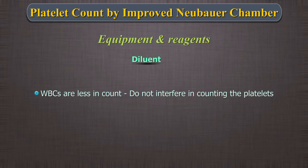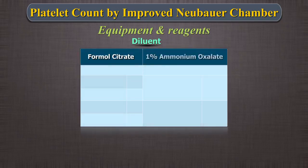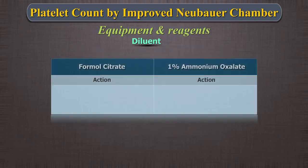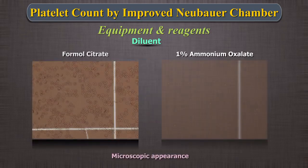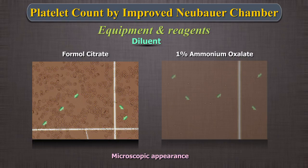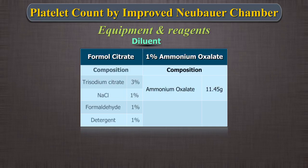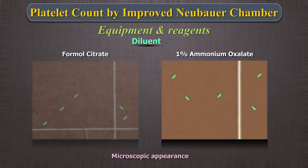WBCs are less in count so they do not interfere in counting the platelets. Comparing the two diluents: Formal citrate — Composition: trisodium citrate 3%, NaCl 1%, formaldehyde 1%, detergent 1%. Action: platelets are fixed and RBCs lysed at a dilution of 1 in 100. 1% ammonium oxalate — Composition: ammonium oxalate 11.45 grams, phosphate buffer 1 gram. Action: lyses RBCs at any dilution while WBCs and platelets are intact.